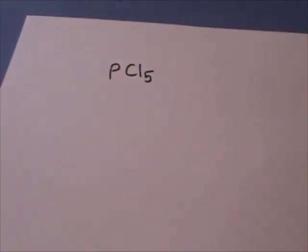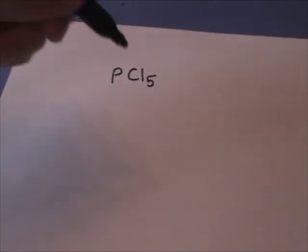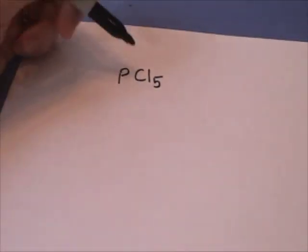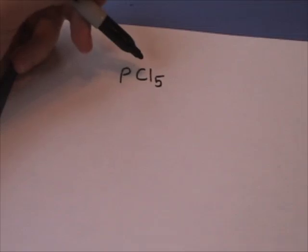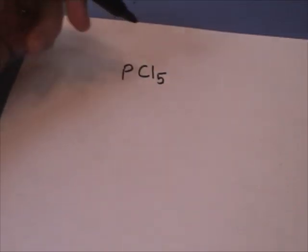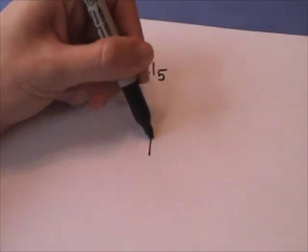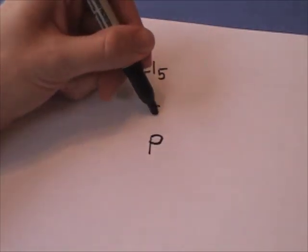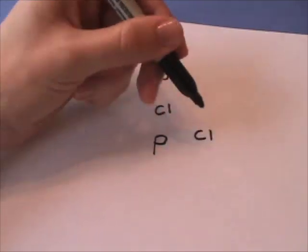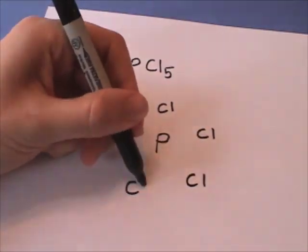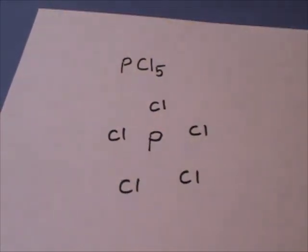Now let's draw the Lewis dot structure for phosphorus pentachloride, or PCl5. We know that the halogens can only form one bond, so they're going to surround this phosphorus central atom. We're going to put phosphorus in the center, and then these more electronegative halogen chlorides around that phosphorus.